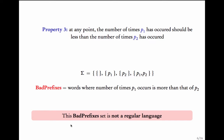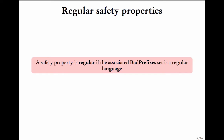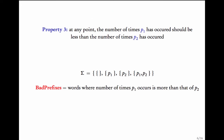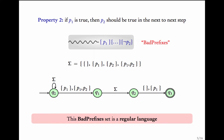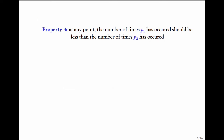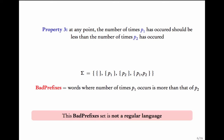As you see, some bad prefixes sets can be described by automata and some of them cannot be. This gives us the definition of regular safety properties: a safety property is said to be regular if the associated bad prefixes set is a regular language. So Property 1 and Property 2 are regular safety properties, whereas Property 3 is not a regular safety property.